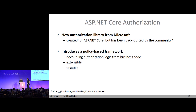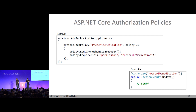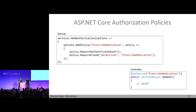There are a couple of different ways to use the policy system. The idea is you have a policy and certain requirements the user must satisfy to be allowed to perform the operation. In the DI system, you add the authorization services and define these policies. A policy has a name — in this case 'prescribed medication' — and you express what you expect the user to have. I require that the user is authenticated and that they have a permission called 'prescribed medication.'